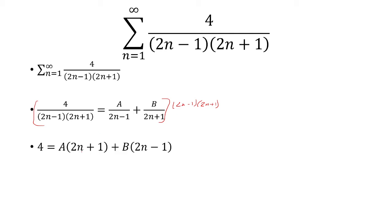At this point, I'm going to solve for A and B. So let's pick values of n that makes whatever is inside the parentheses equal to 0. Starting with the first parentheses, when is 2n plus 1 equal to 0? That's when n equals negative 1 half. So this whole thing is 0, so we have 4 equals 2 times negative 1 half minus 1. That's going to be negative 2. So we have 4 equals negative 2B, and that makes B equal negative 2.